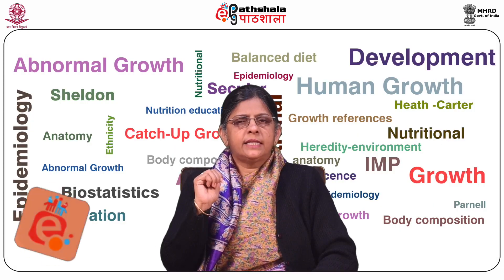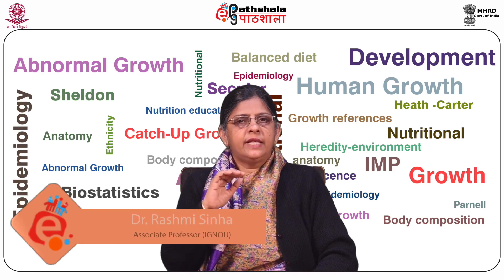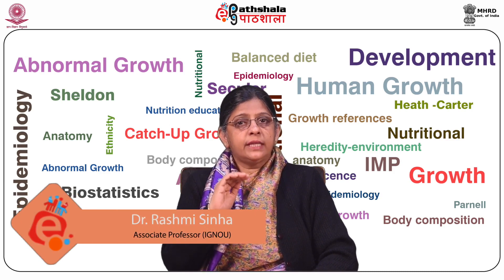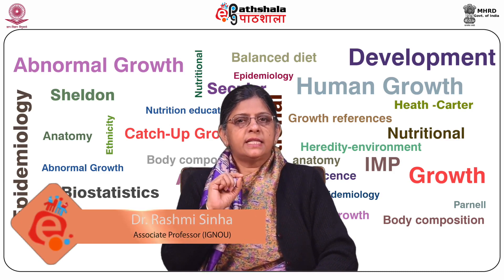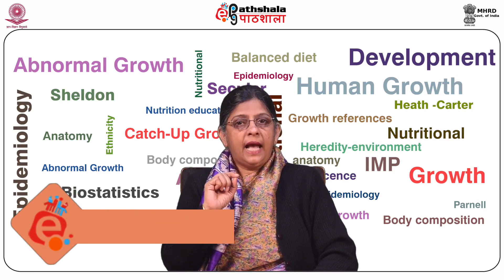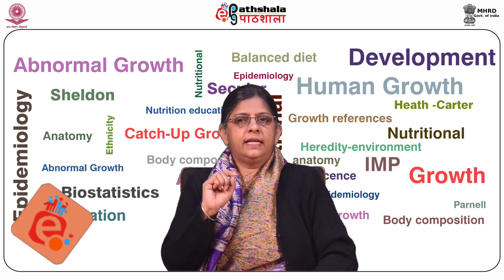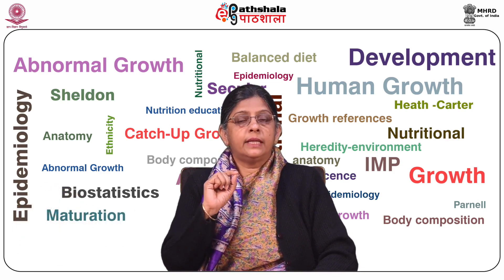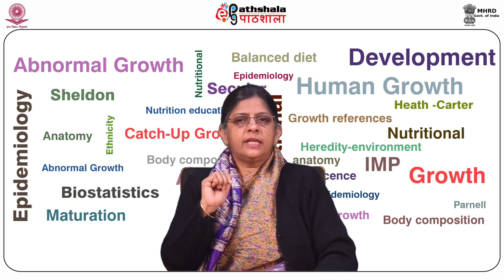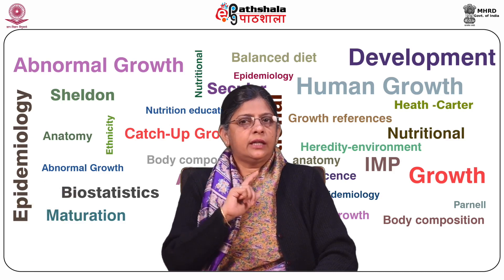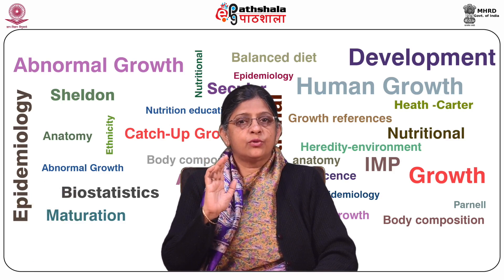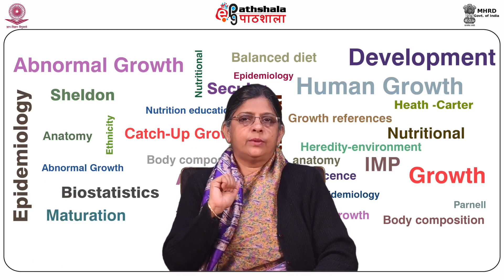Chronological age and decimal age give the accurate age of the individual, whereas decimal and skeletal age give the approximate age of the individual. The research age is not considered an appropriate method and is used mostly as a research question.